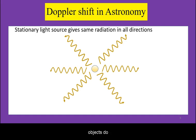However, objects do emit or reflect light. Light is a wave, hence it also behaves the same way when its source is moving.